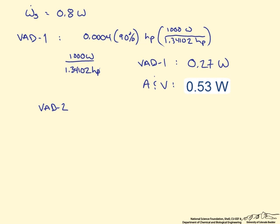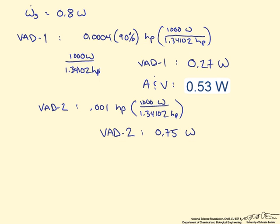Now VAD-2 we are told requires 0.001 horsepower, converts it all to shaft work. So if we do the same conversion we did before, we get that VAD-2 can perform 0.75 watts of shaft work on the blood.